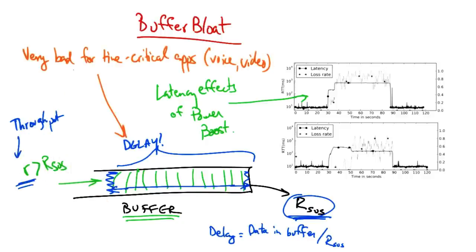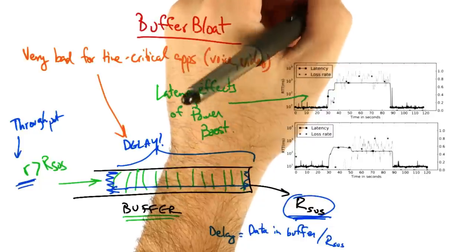These large buffers can introduce delays that ruin the performance for time critical applications such as voice and video. These large buffers actually show up all over the place.